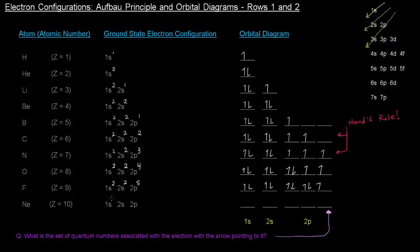Then neon, Z equals 10, 10 electrons, 1s2, 2s2, and 2p6. So 1s is filled, 2s is filled. And even the 2p is also filled. 1, 2, 3, 4, 5, 6. So we've filled all of the orbitals with neon, a noble gas. Super important, actually. Keep that in mind. Noble gas, filled configuration, filled orbitals.